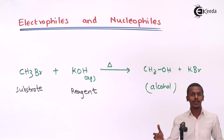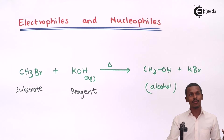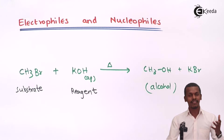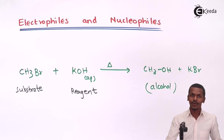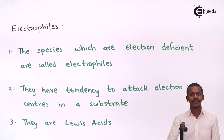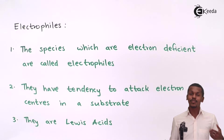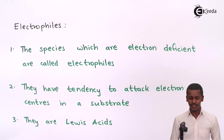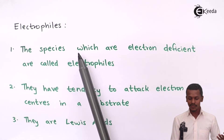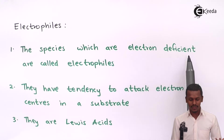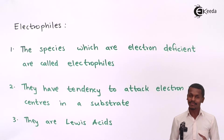So what are electrophiles and what are nucleophiles, and how do they play a vital role in the reaction? Let us now talk about electrophiles. According to the definition, species which are electron deficient are called electrophiles.